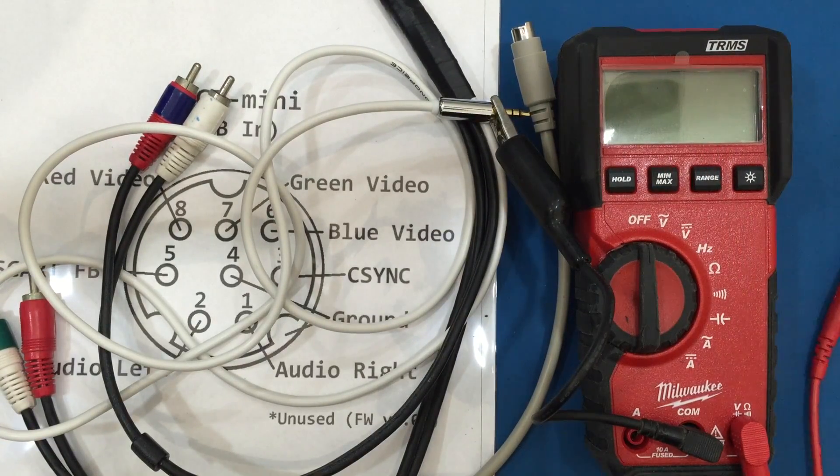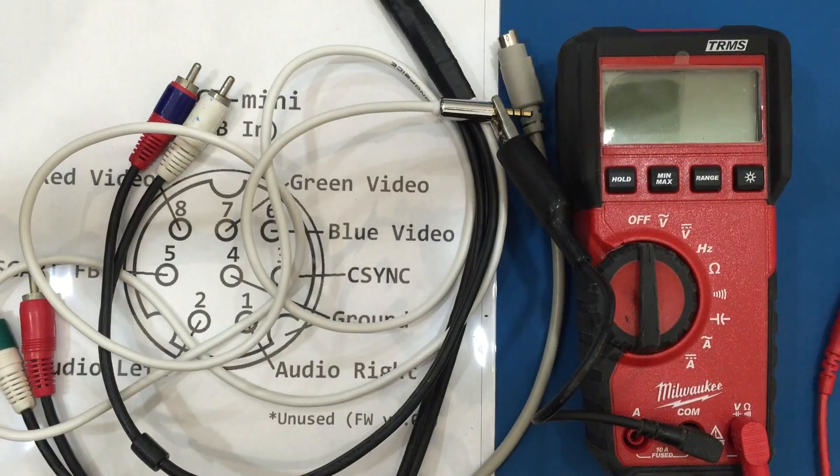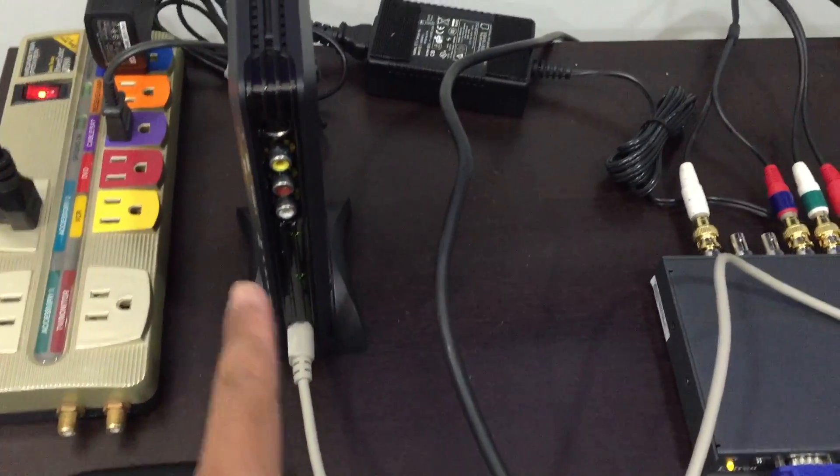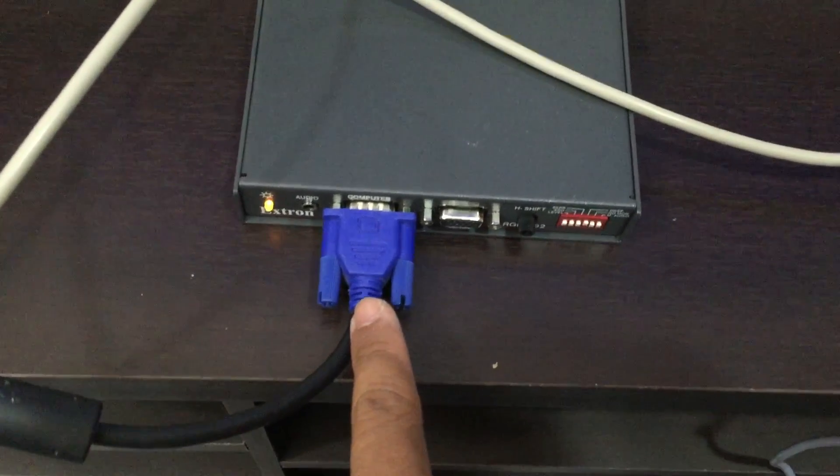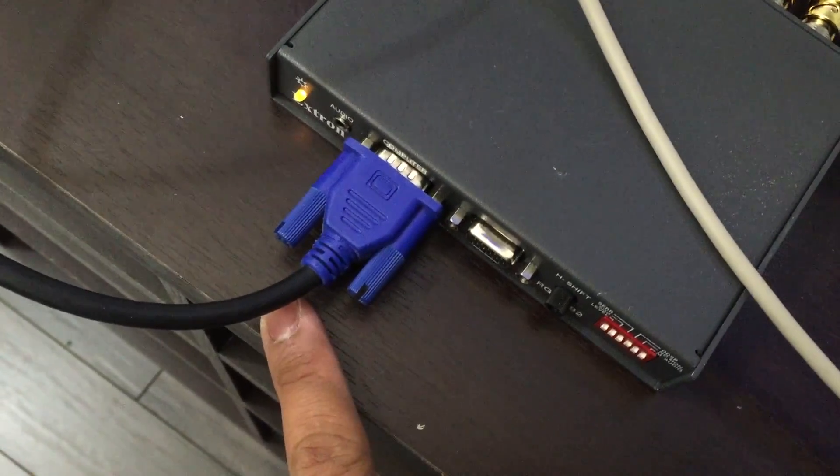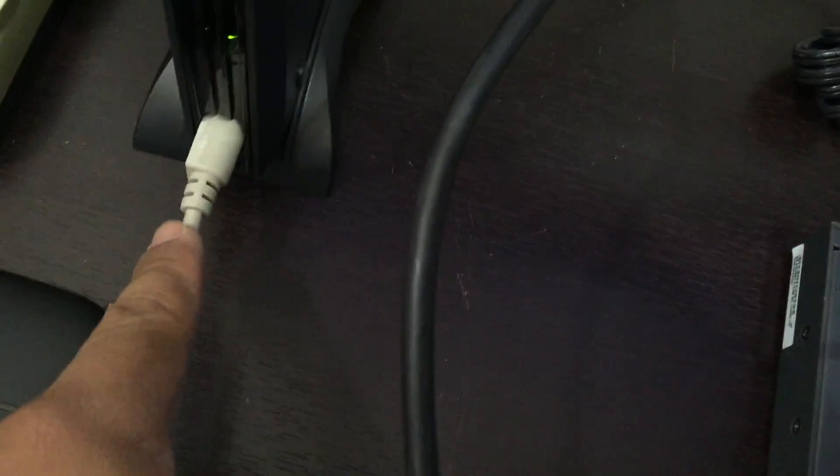Now we're just gonna be connecting this to the RGB interface and the Framemeister. And hopefully this works out. Okay we have everything hooked up. We have Framemeister which is on RGB mode. The RGB interface turned on with the power supply connected to the VGA box via VGA cable going to the RGB interface. And our homemade cable going to the Framemeister directly.